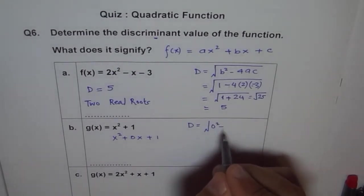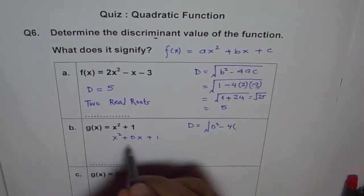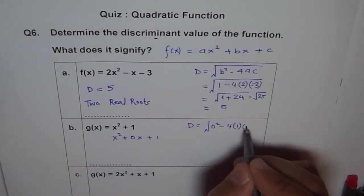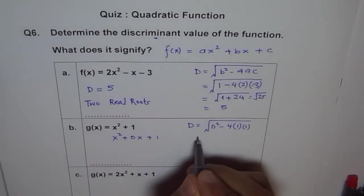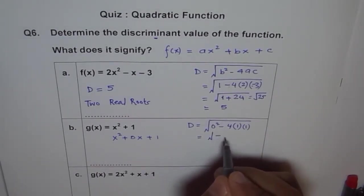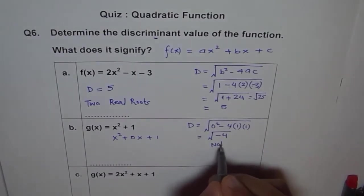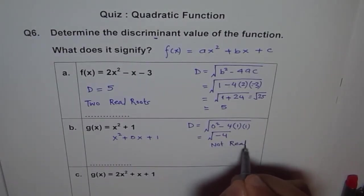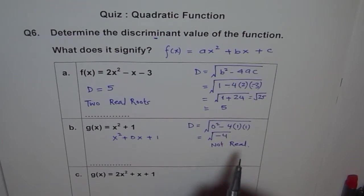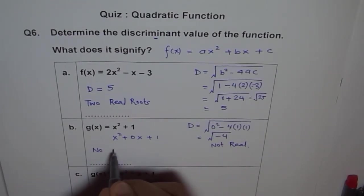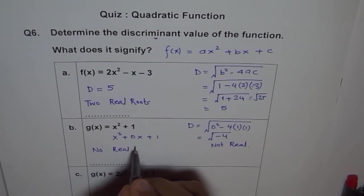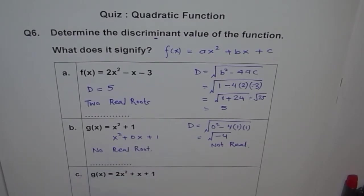So we have 0² - 4 times a is 1 and c is 1. We get √(-4). This is not real, so it signifies that we have no real root.